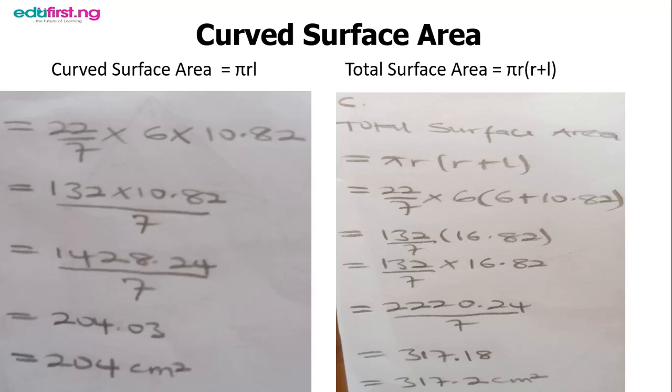Based on BODMAS, I solve the bracket first: 6 + 10.82 = 16.82. We multiply the numerators and divide by the denominator, which is 7.